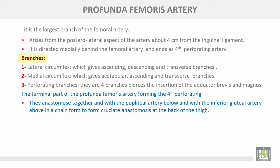Branches of the profunda femoris artery: number one, the lateral circumflex, which gives ascending, descending, and transverse branches. Number two, the medial circumflex, which gives acetabular, ascending, and transverse branches. Perforating branches are four branches that pierce the insertion of adductor brevis and magnus. The terminal part of the profunda femoris forms the fourth perforating branch. These anastomose with the popliteal artery below and the inferior gluteal artery above, in a chain to form the cruciate anastomosis at the back of the thigh.